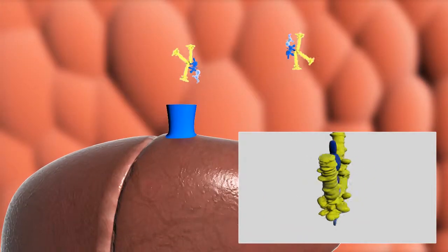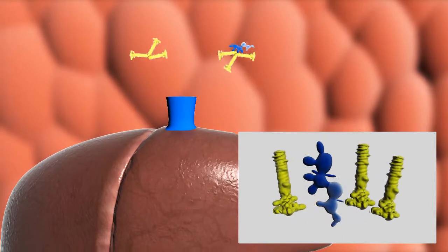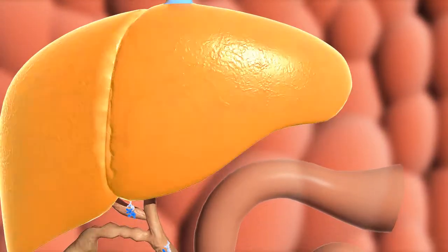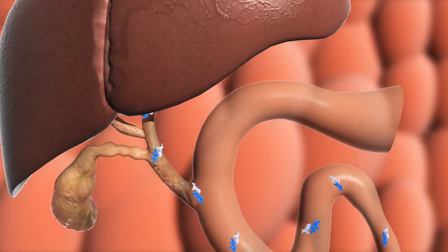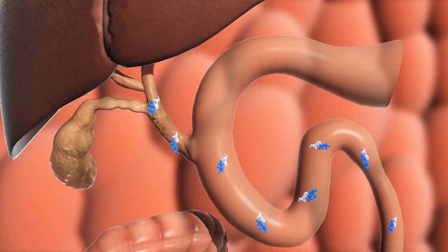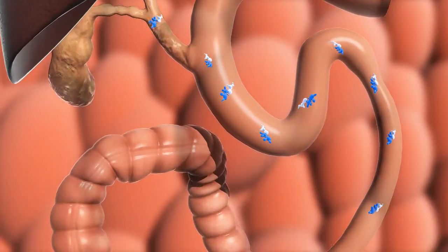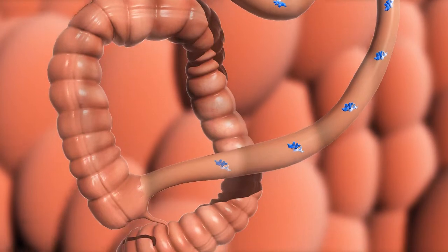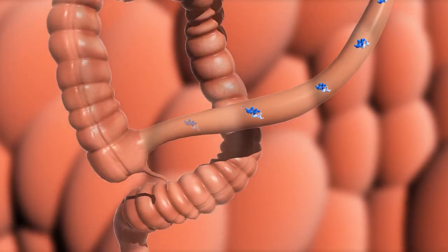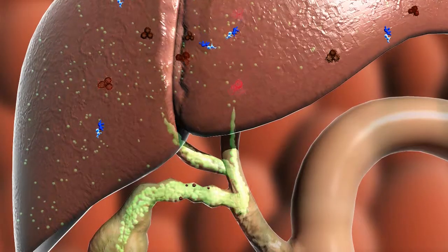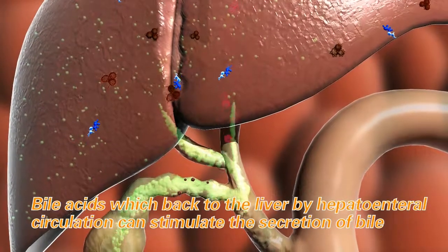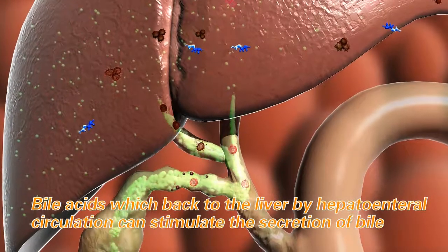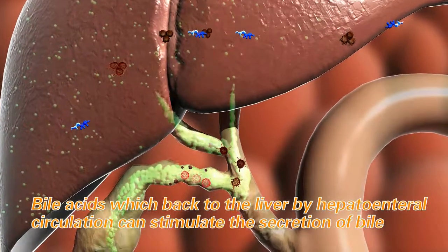At the same time, bile acids separate from the compound and return to the liver through the portal vein, then re-enter the intestine with newly secreted bile acids to complete enterohepatic circulation. Under this circulation, recyclable bile acids promote further bile secretion.